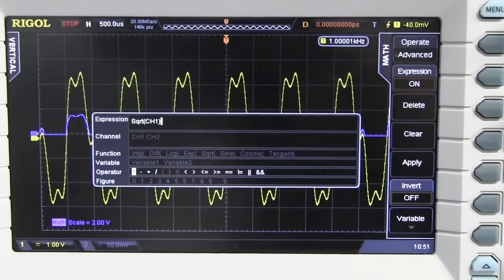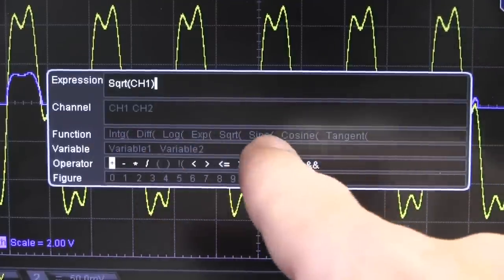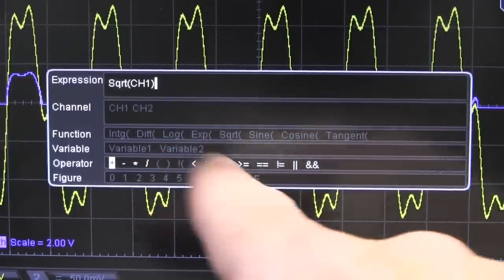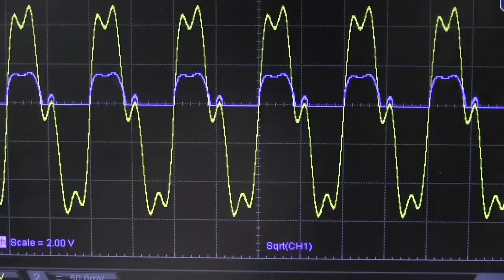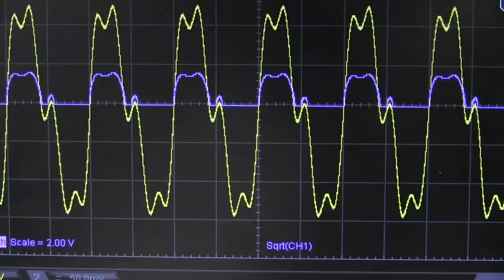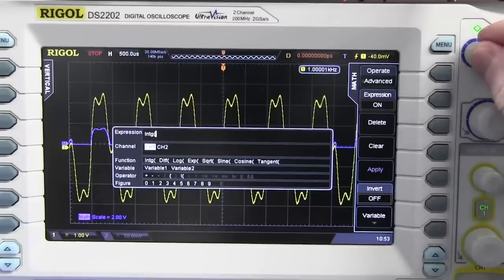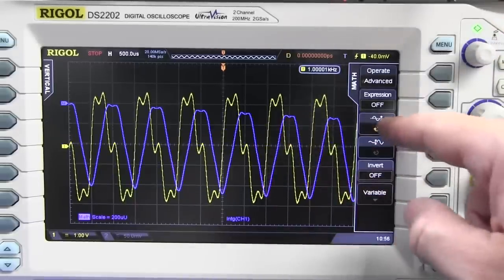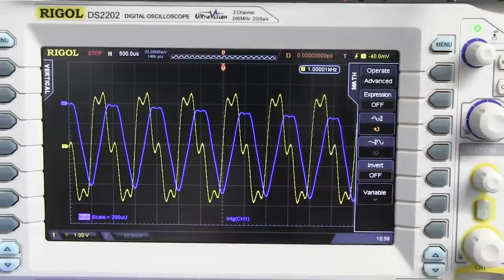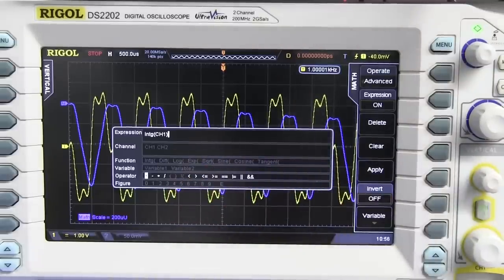And what we can do here is set up advanced math expressions which allow us to do all sorts of stuff. Check it out. We've got integrals, differentials, logs, exponents, square roots, sine, cosine, tangent variables. And we can do various arithmetic operators as well. In this case I'm going to do the square root of channel 1. So if we apply that, then bingo, that is our square root of channel 1, the purple waveform there. And what we'll do here is we'll have a go at the integral of channel 1. So we select integral, we select channel 1 there, we select closing brackets, that's our expression, and we apply that, and there's the integral of that waveform when you scale it and position it correctly. Beautiful. And you can do that for advanced expressions, channel 1, channel 2, combine them as well as constants and all sorts of things. Fantastic.